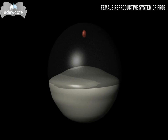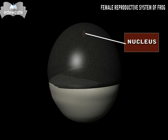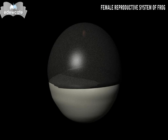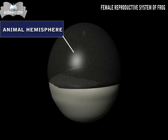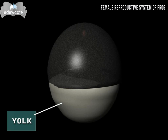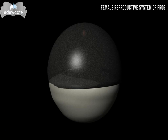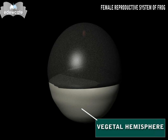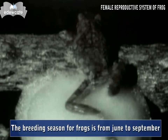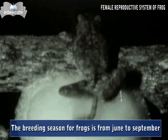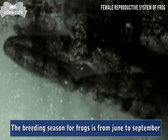The ovum of frog is spherical. In the upper part is the nucleus, and this part is black due to pigment present in the cytoplasm. This part is called the animal hemisphere. Yolk is concentrated at the other pole, which is whitish — this pole is called the vegetal hemisphere. The breeding season for frogs is from June to September.